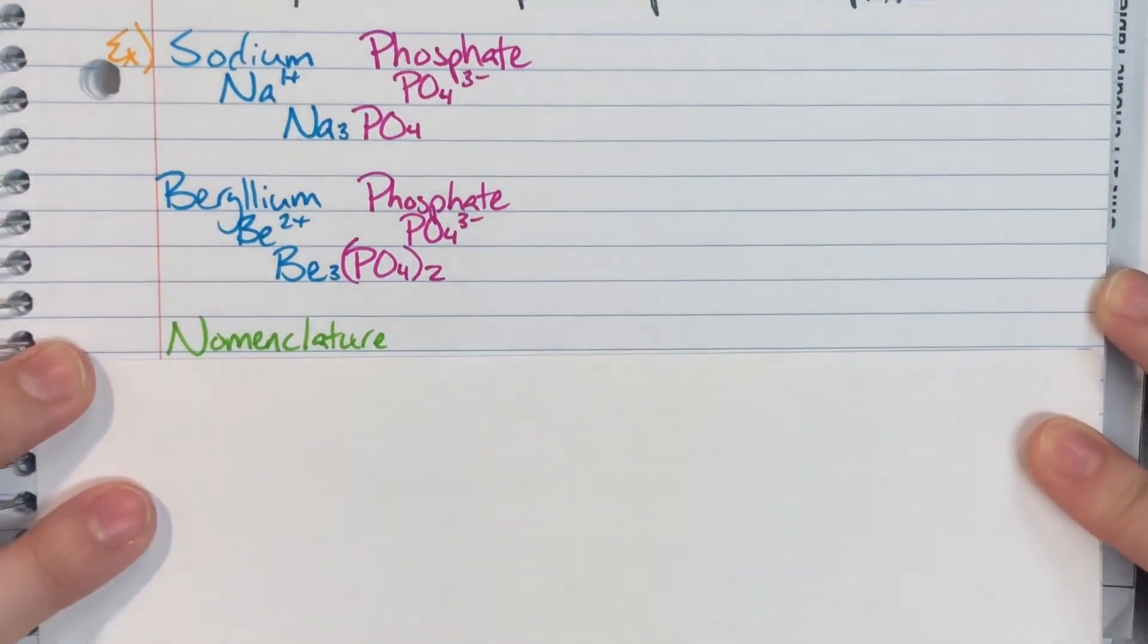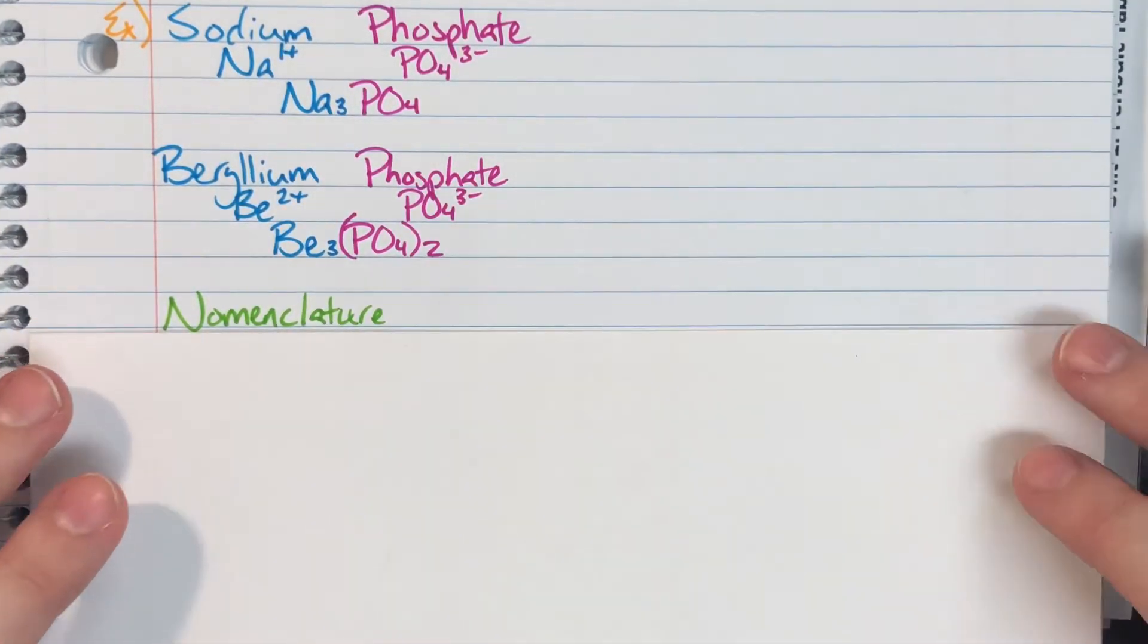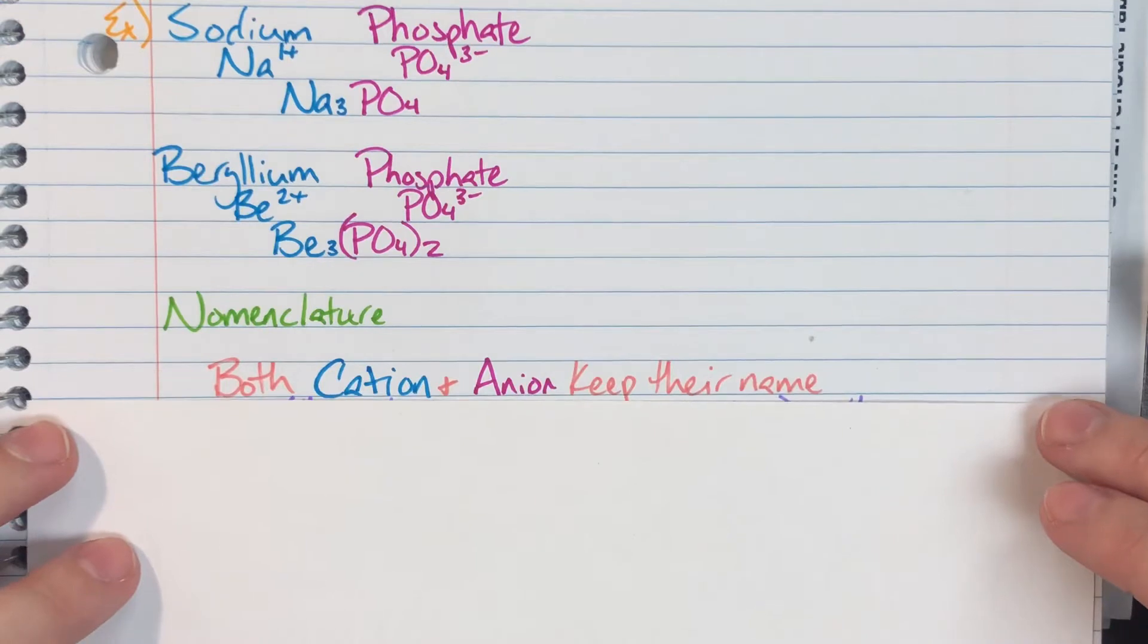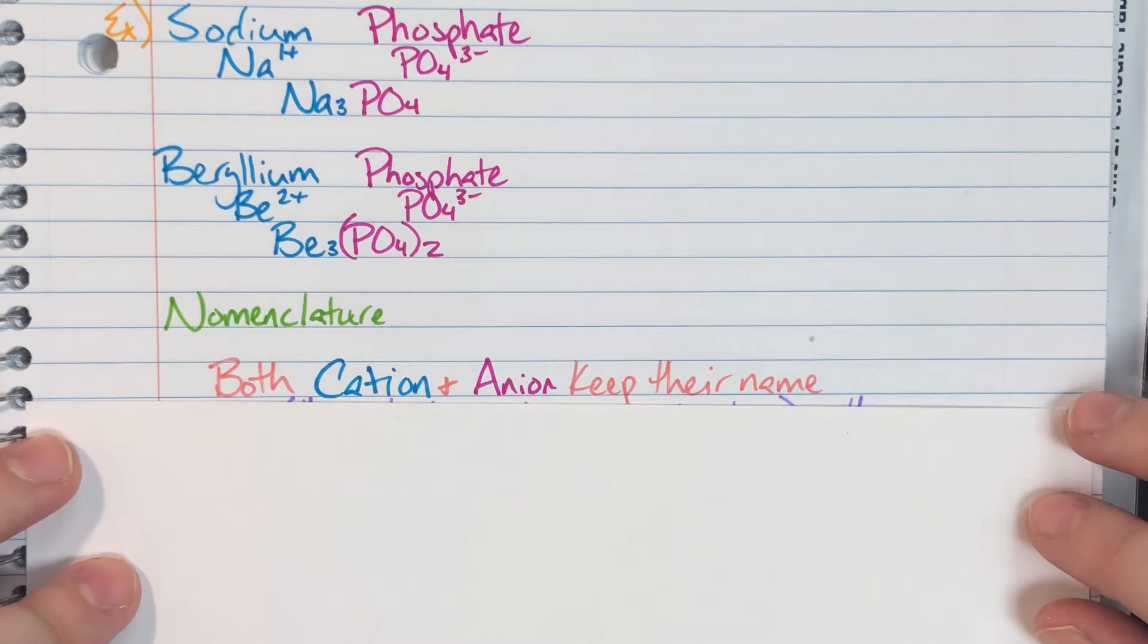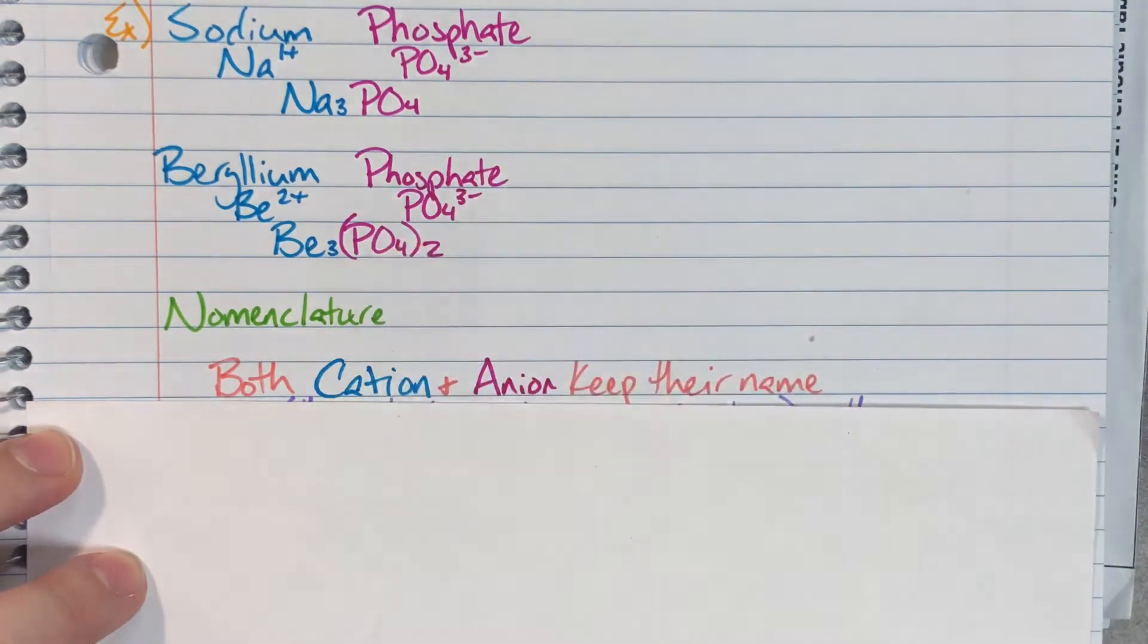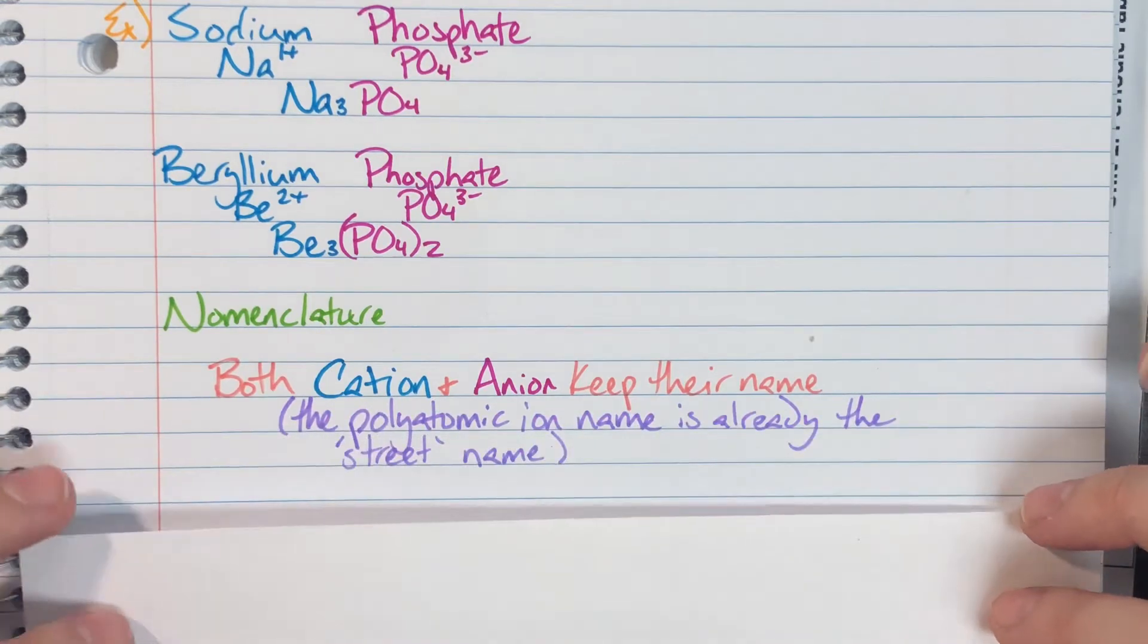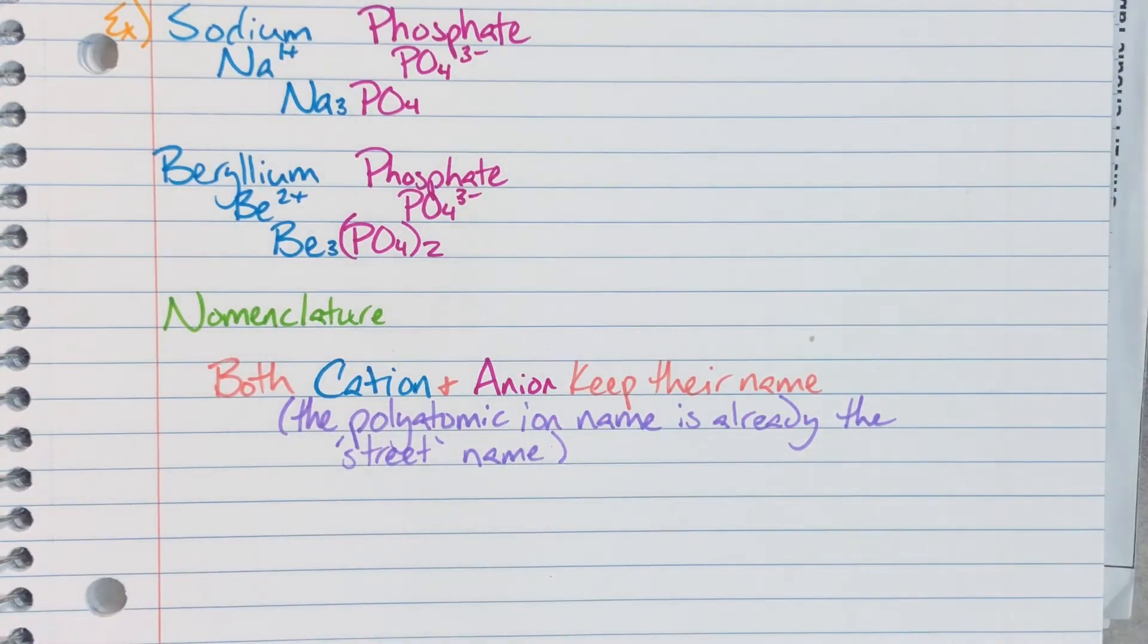Now for nomenclature for polyatomics, it's actually going to be really easy. Both my cation and my anion get to keep their name. Phosphate is already this ion's anion name, so I do not need to change it. And so all I get to do is just find my cation. If it's a transition metal cation, then I will figure out its oxidative state and I'll add that information in. And then I will just find my polyatomic and just state it as it is.